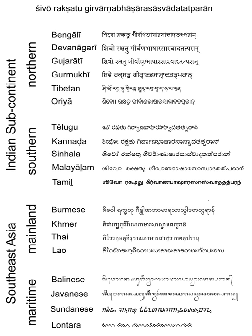An abugida, or alphasyllabary, is a segmental writing system in which consonant-vowel sequences are written as a unit; each unit is based on a consonant letter, and vowel notation is secondary. This contrasts with a full alphabet, in which vowels have status equal to consonants, and with an abjad, in which vowel marking is absent, partial, or optional, although in less formal contexts all three types of script may be termed alphabets. The terms also contrast them with a syllabary, in which the symbols cannot be split into separate consonants and vowels.